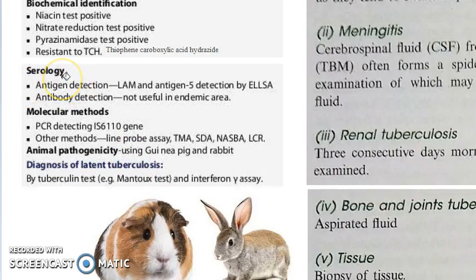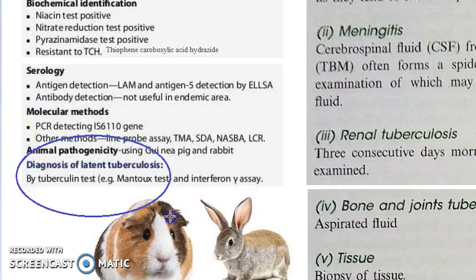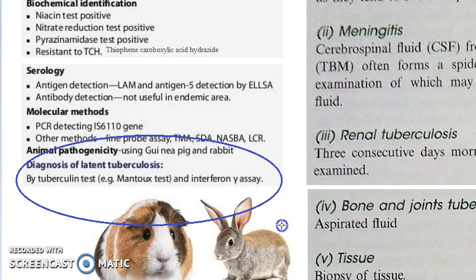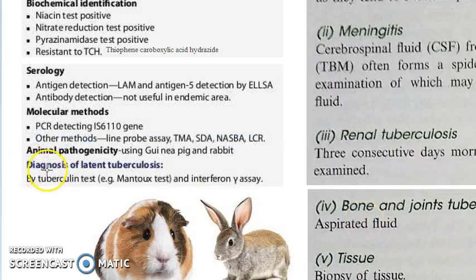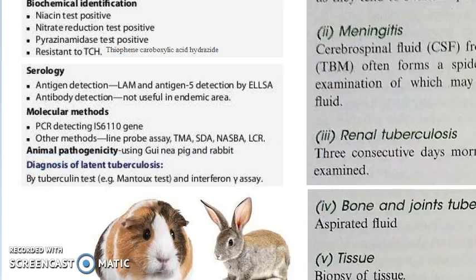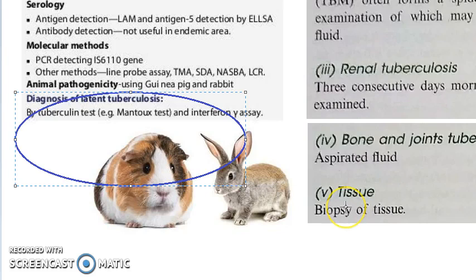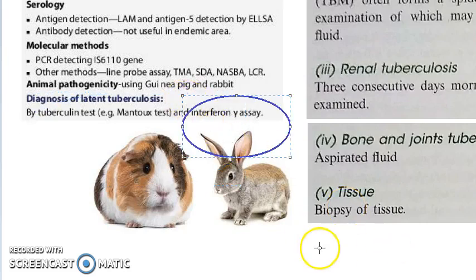For serology you can do antigen detection or antibody detection. Then for molecular methods, write PCR, and also write typing. Then for animal pathogenicity, you do animal inoculation on guinea pig and rabbit. Latent tuberculosis can be diagnosed by the tuberculin test, Mantoux test, or interferon gamma assay.